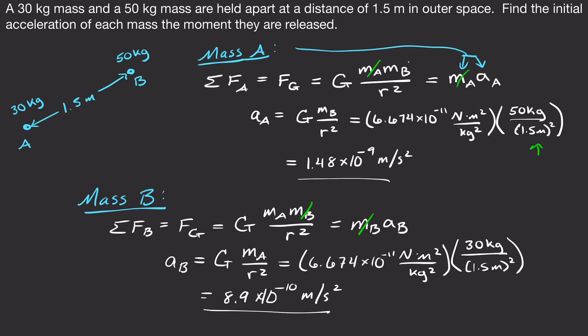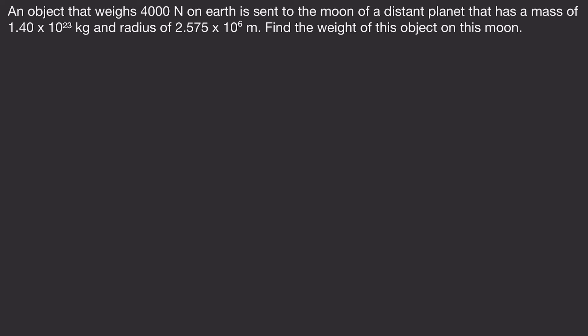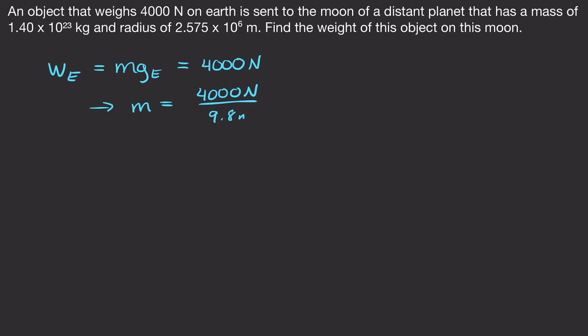Next problem: an object weighing 4,000 Newtons on Earth is sent to a moon with mass 1.4 × 10²³ kg and radius 2.575 × 10⁶ meters. Find its weight on this moon. First, find the object's mass using weight = mg on Earth: 4,000 N divided by 9.8 m/s² gives a mass of 408 kilograms. Mass doesn't change regardless of location.